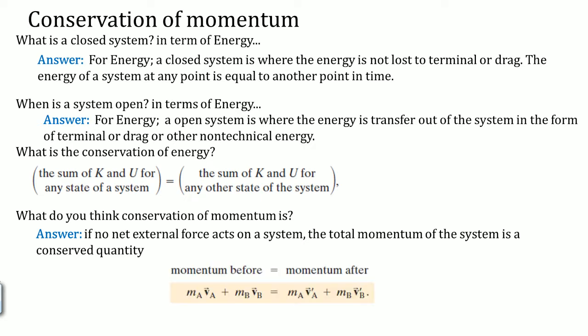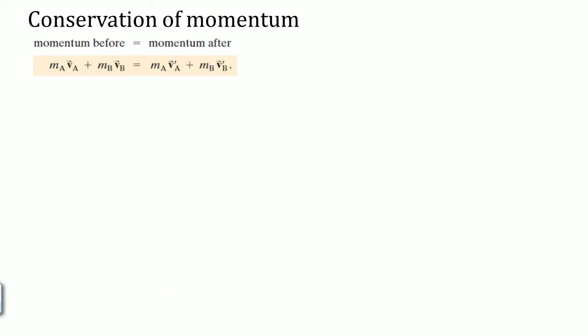So the momentum before is equal to the momentum after. The interesting part of conservation of momentum is that it deals with two separate masses — mass A (mass 1) and mass B (mass 2). Let's take a look at the conservation of momentum equation. There are two types of masses and they interact somehow.